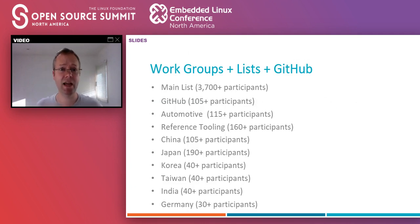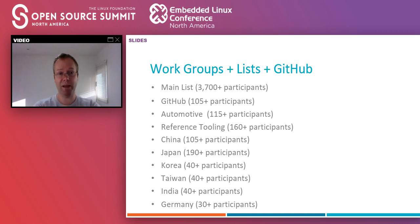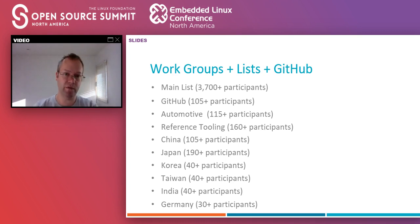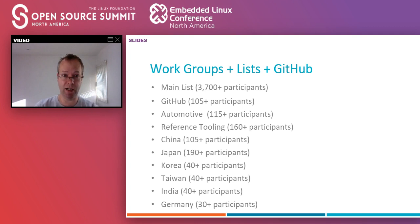We're going to pass through some key points about how big OpenChain is. The OpenChain mailing list has been active for about three years. We've got over 3,700 participants from hundreds of companies. We have over 100 active contributors on GitHub. We've got automotive workgroups on a global scale, reference tooling on a global scale — both north of 100 participants, around 80 to 100 companies in each workgroup. We have regional activities in China, Japan, Korea, Taiwan, India, and Germany.